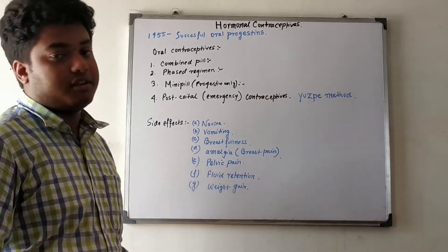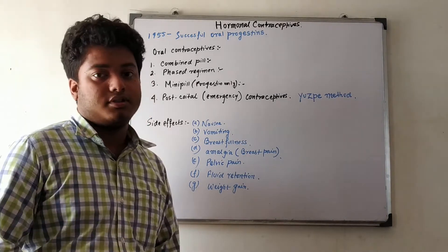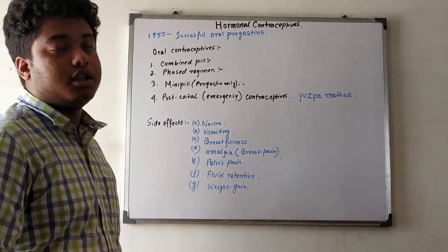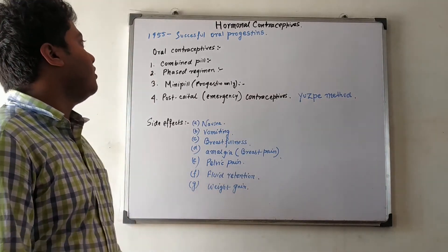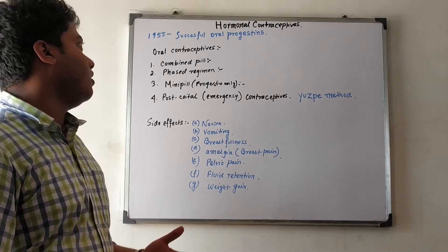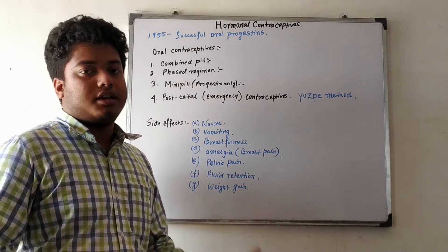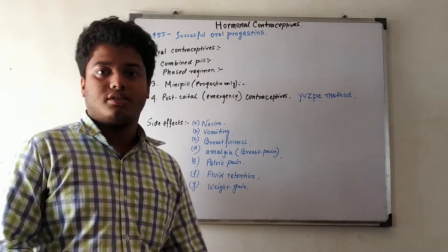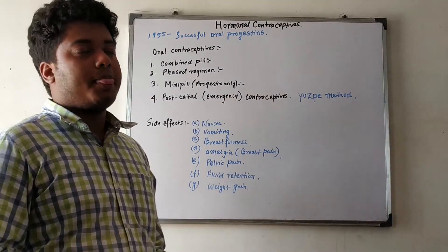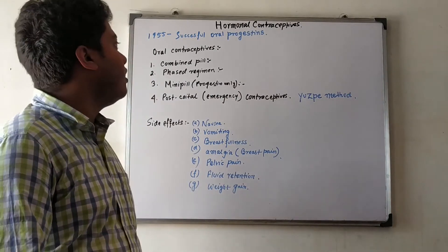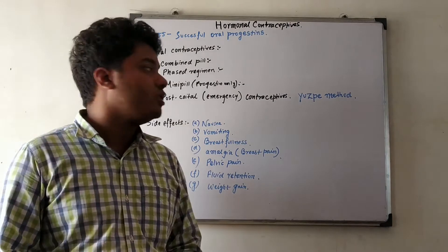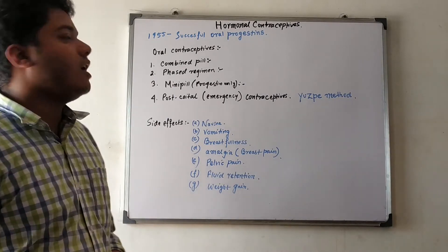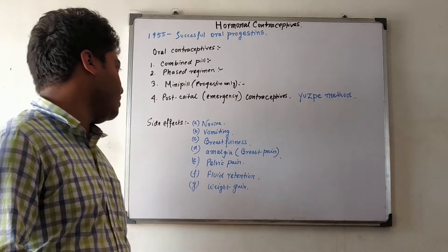In 1955, successful oral contraceptives were first discovered — that was progestin. Since then, acceptable synthetic compounds have been developed. There are two general classes. Oral contraceptives are generally taken, as compared to some implantables. There are different types: combined pills, phasic preparations, mini pills, and postpartum or emergency contraceptive pills.